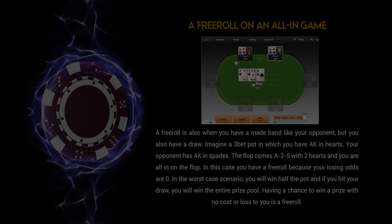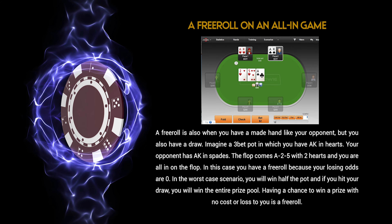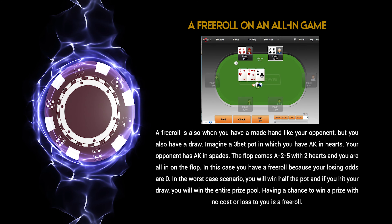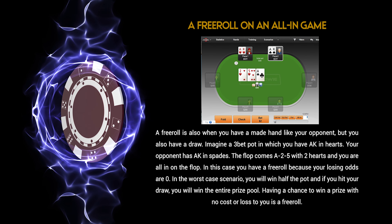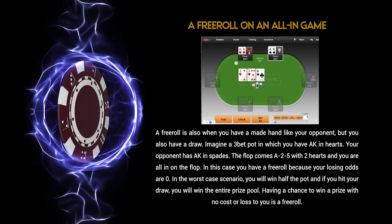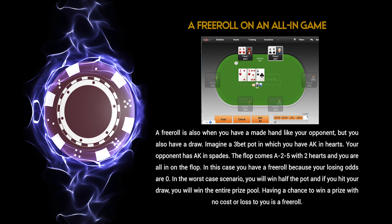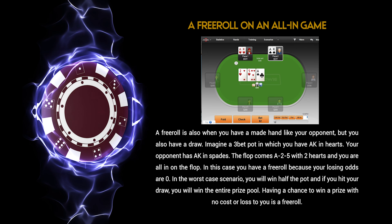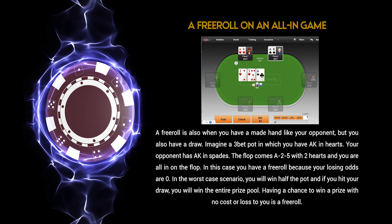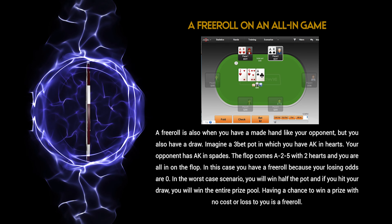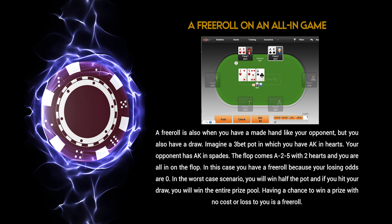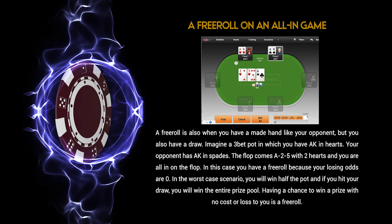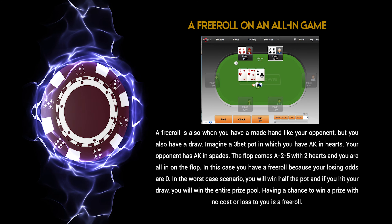A free roll in an all-in game is also when you have a made hand like your opponent, but you also have a draw. Imagine a three-bet pot in which you have ace-king of hearts and your opponent has ace-king of spades. The flop comes ace, 2, 5 with two hearts and you are all in on the flop. In this case you have a free roll, because your losing odds are zero.